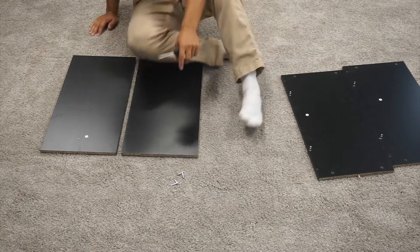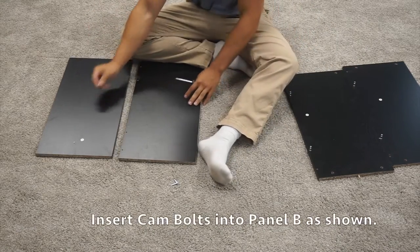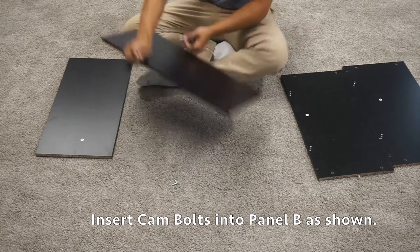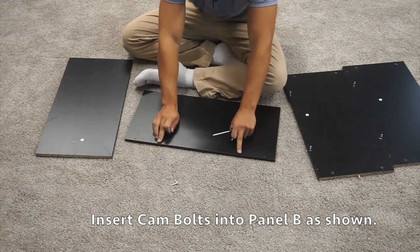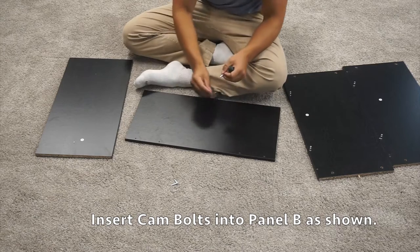Now you'll want to take four more cam bolts and your two B panels and once again, screw the cam bolts into the middle two pre-drilled holes on the inside.